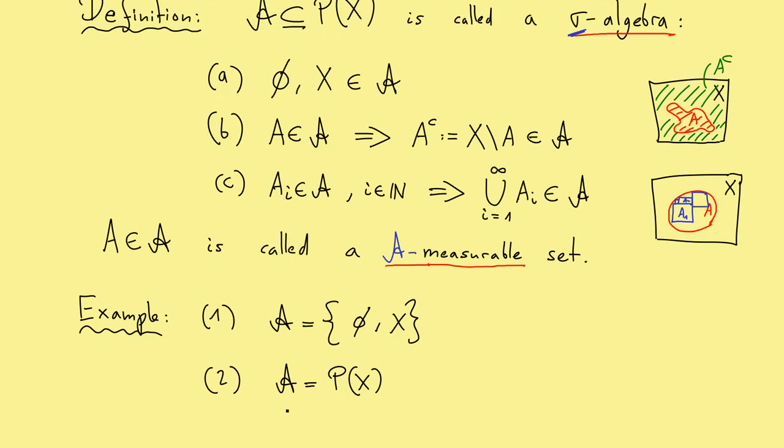Therefore, this would be the best case scenario that we can measure all possible subsets. However, I already told you, for important examples, we can't fulfill this. And therefore, our sigma algebra will lie between these two extrema.